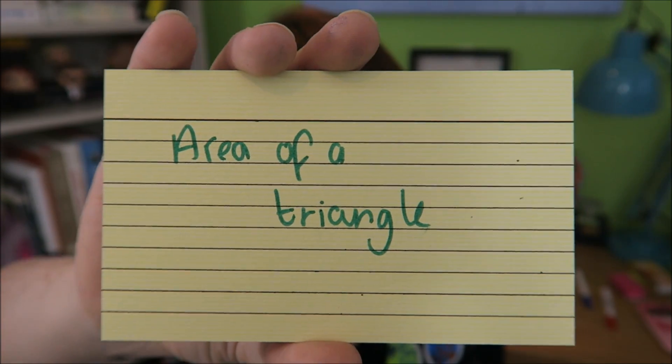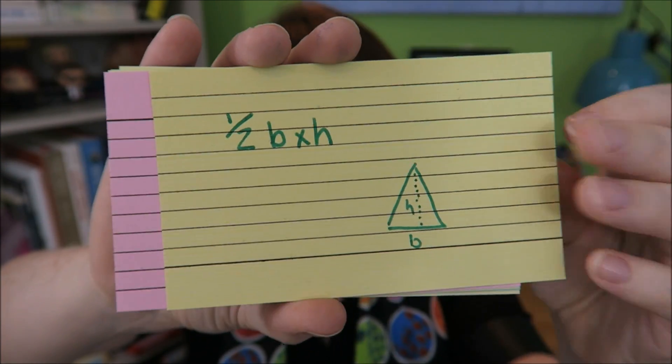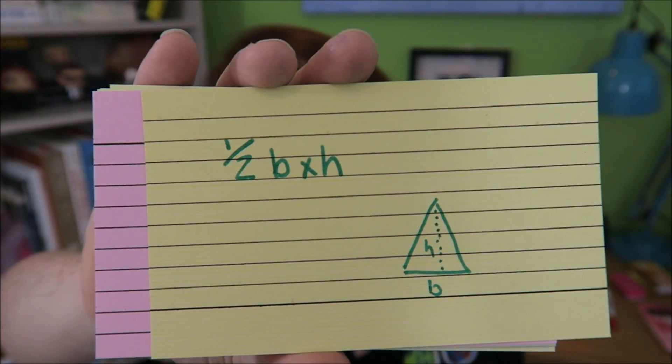Area of a triangle. Another nice, easy one here. Half base times height.